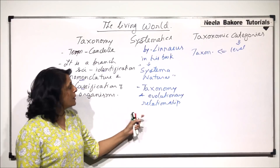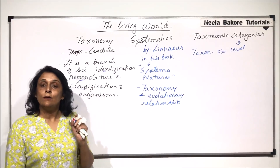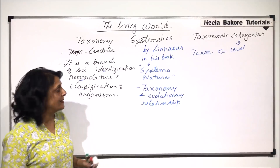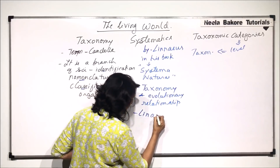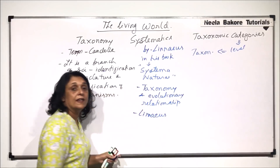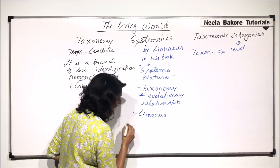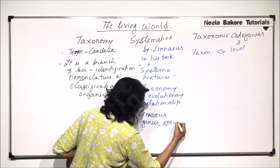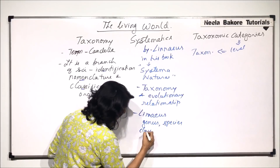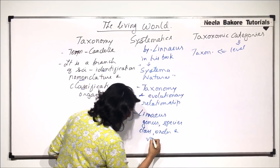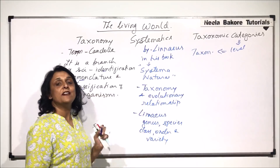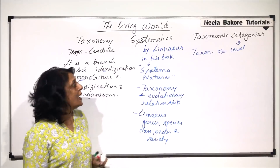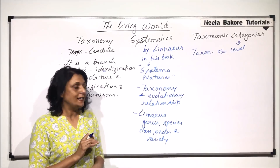Now we have understood taxonomy and systematics. Let us talk about what categories were given by Linnaeus. The categories given by Linnaeus were genus, species, class, order, and variety — five different categories. Later on, these categories were changed and a few more categories were added.